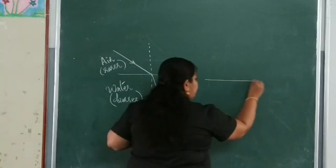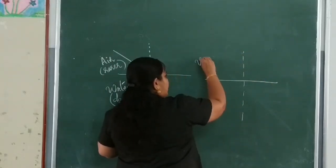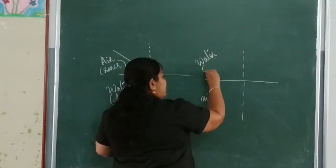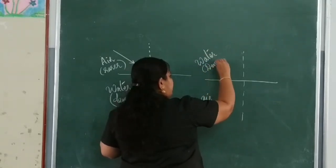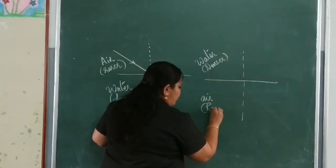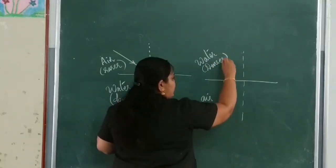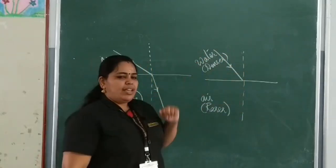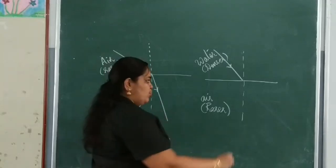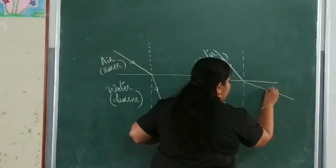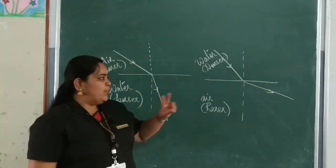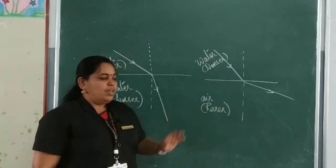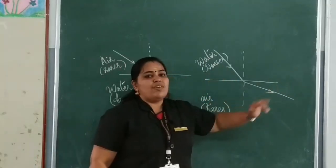The second point: here, water to air — water is the denser medium and air is the rarer medium. When a light ray travels from a denser medium to a rarer medium, it moves away from the normal. Second point: when a light ray travels from a denser medium to a rarer medium, the light ray moves away from the normal.